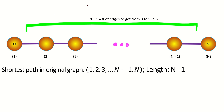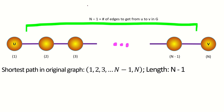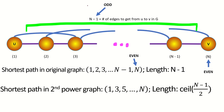Moving on, if the length of the original shortest path between vertices u and v was even, the length of the shortest path between u and v in the second power is half of the original. If the length is odd, then the length of the shortest path between u and v in the second power is the ceiling of half of the length of the original shortest path. You can think of this as shortening the original shortest path by approximately a factor of 2, as path lengths must be whole numbers.